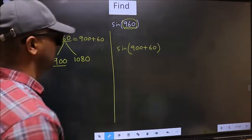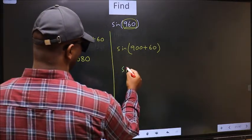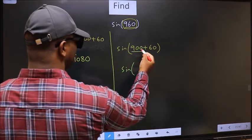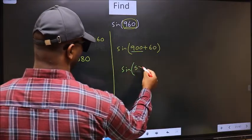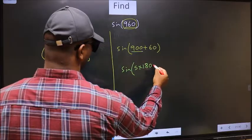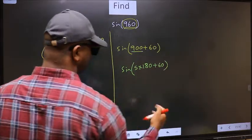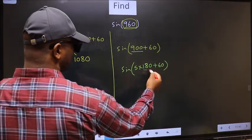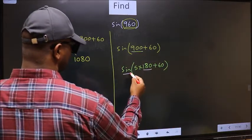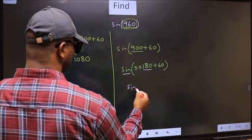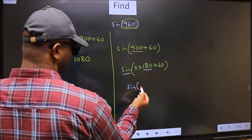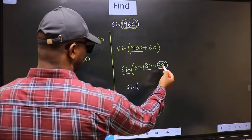Next, sin. In place of 900, now we should write 5 times 180 plus 60. Next, here we have 180. So sin is not going to change. It will remain sin. And inside, we get this angle 60.